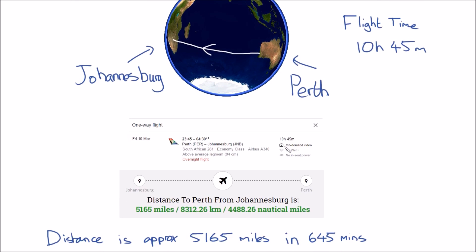So consider this: South African Airways flight direct from Perth to Johannesburg in 10 hours and 45 minutes. Unfortunately, no Wi-Fi is offered and there is no in-seat power, but I'm sure our trustworthy friends at South African Airways are working on it. The distance from Perth to Johannesburg is 5,165 miles.